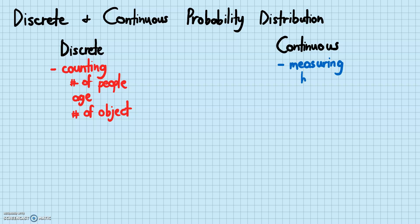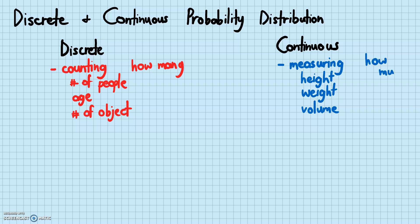But continuous data deals with measuring things. So this involves things like height — you measure your height — weight, or volume. You measure how much water is in a cup. You can't really count how much water is in a cup. So another way of thinking about these is: discrete deals with how many, and continuous deals with how much.